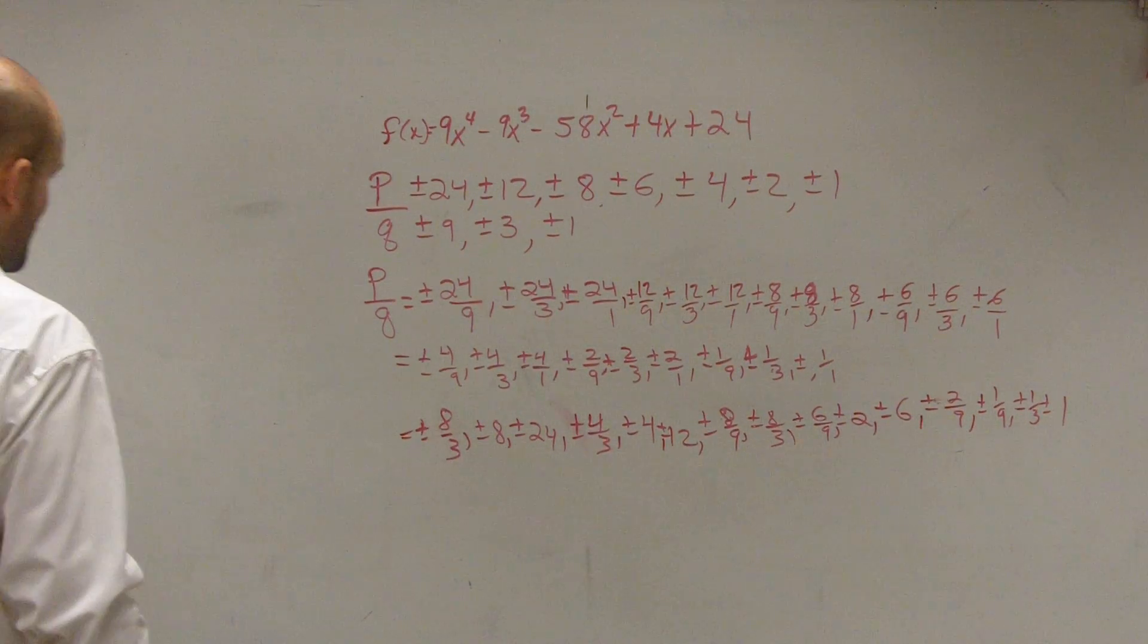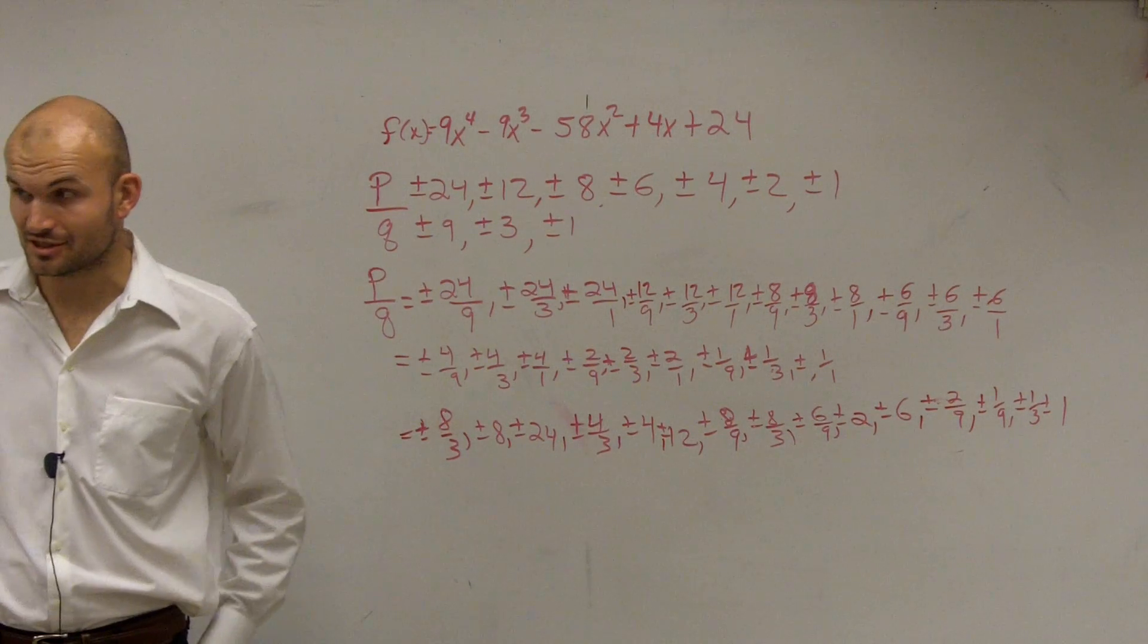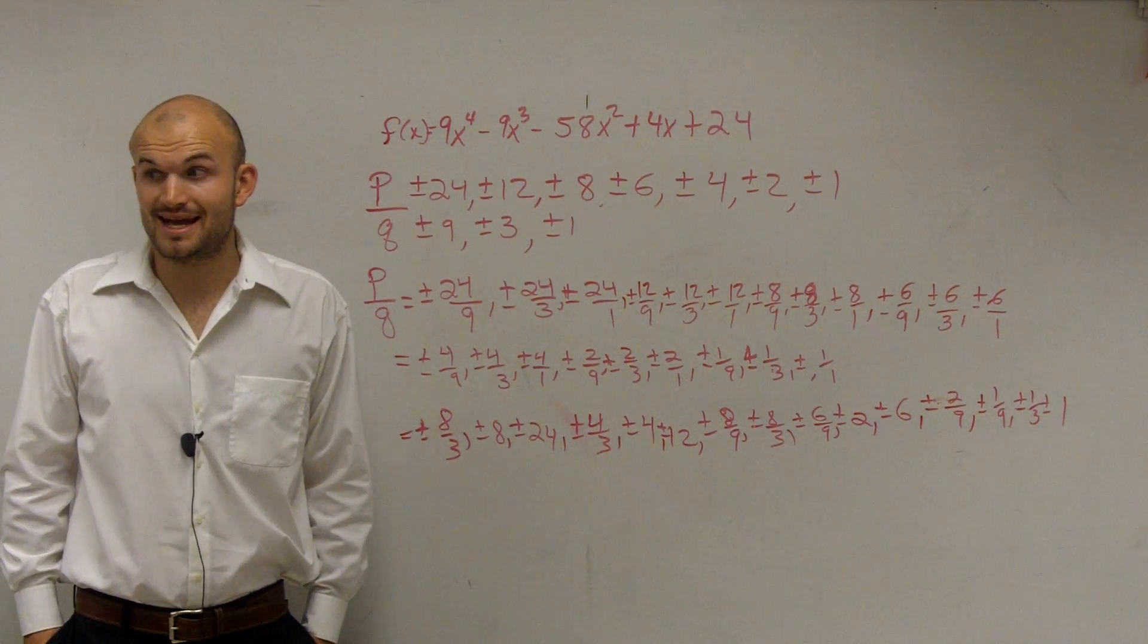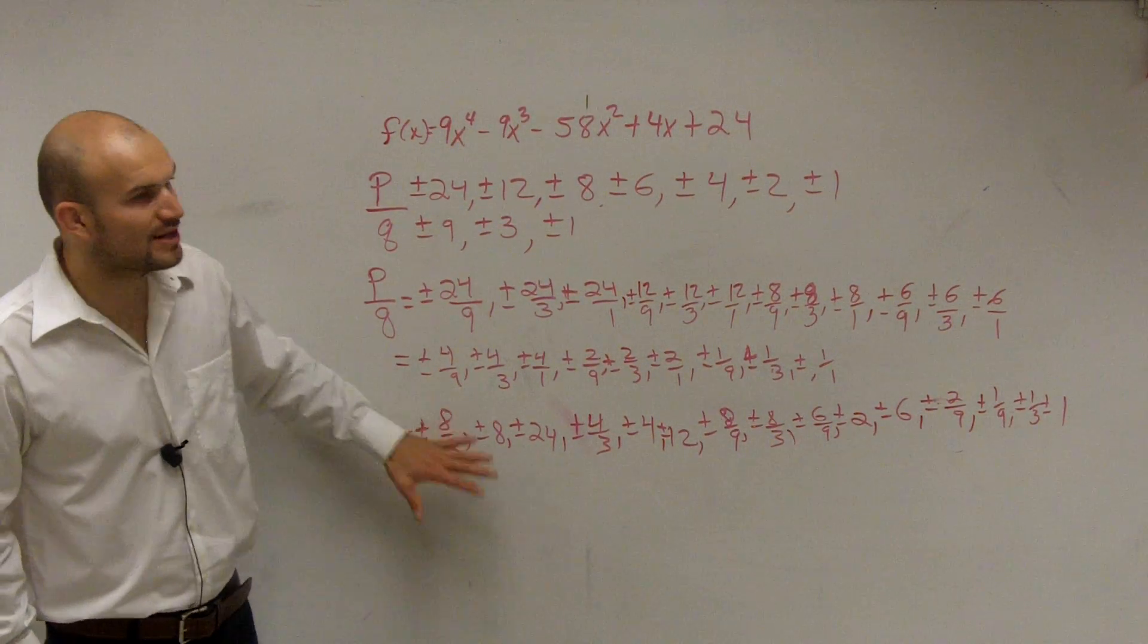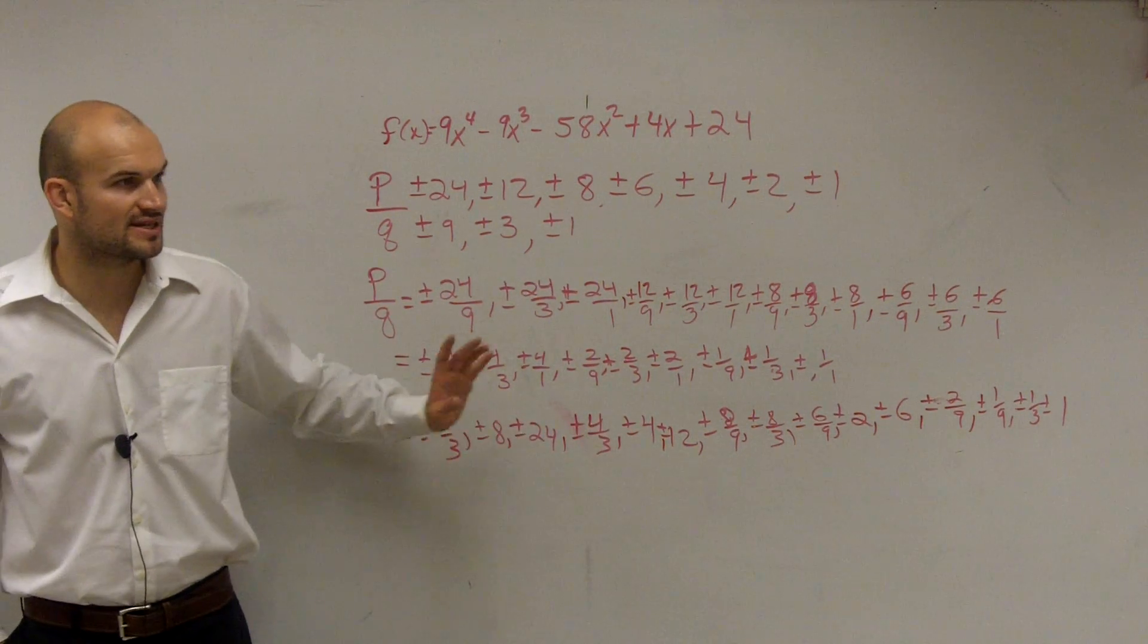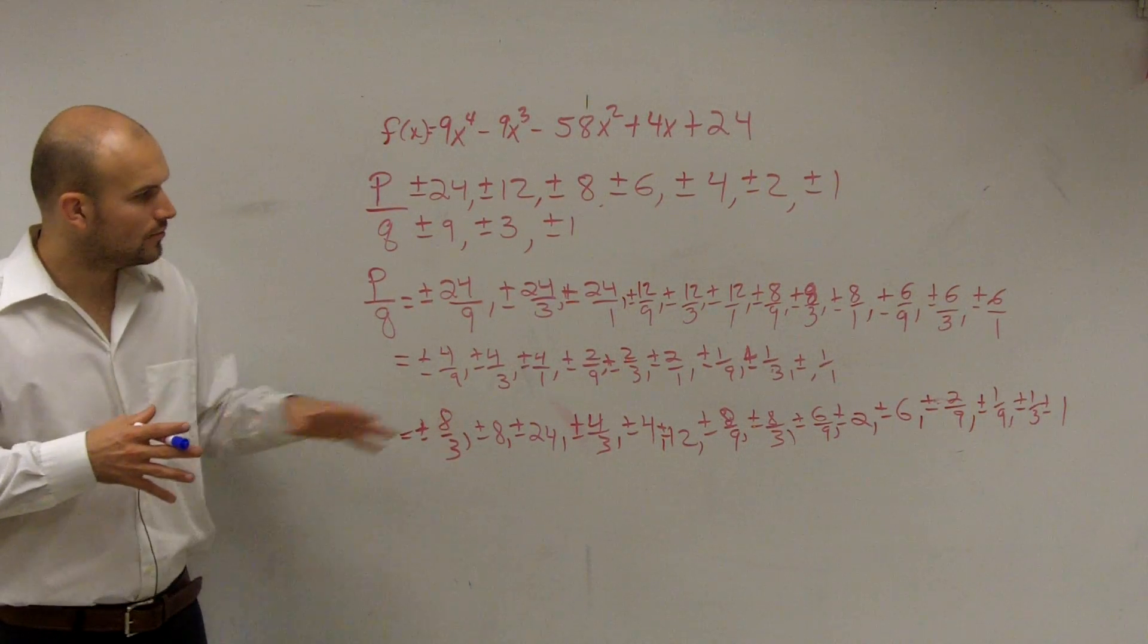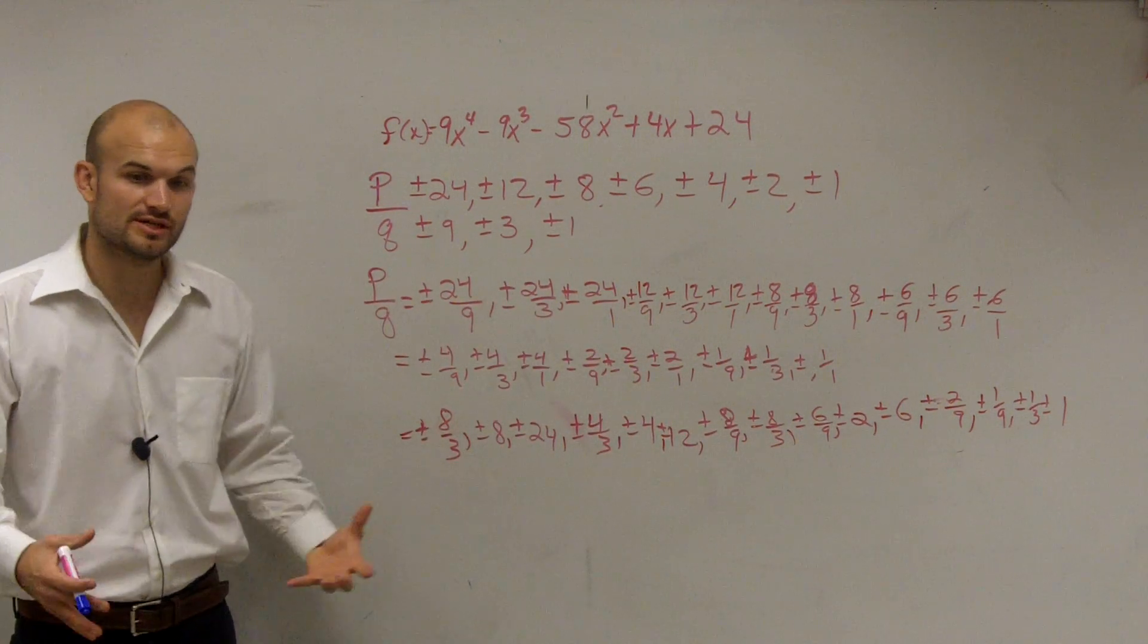So what do you do, ladies and gentlemen, when you have all these factors? If you do not have graphing technology, you're going to have to determine on your own which one of these are going to be your factors or your zeros. And it's like, where do you start? Well, pretty much on your test, you're not going to have one that's going to be this long. You will have one that's going to be easier with less factors or less zeros. But all I wanted you guys to do on your homework was to write down your P over Q, and then what we need to do is determine your zeros.